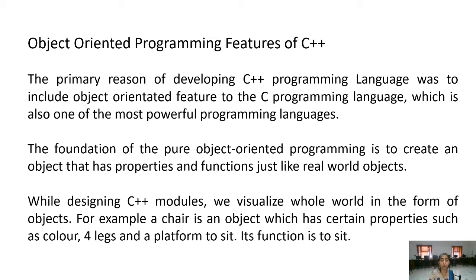Objects are things which we can differentiate from others — like we can differentiate between a table and a car because both have different properties and different functions. We understand and remember things in terms of their properties and functions. These same features we use in object oriented programming approach — we store things in the form of their properties and functions. The primary reason for developing the C++ programming language was to include object oriented features in the C programming language, which is also one of the most powerful programming languages. C++ is a superset of C, starting with C and extending its properties by including object features and class features.